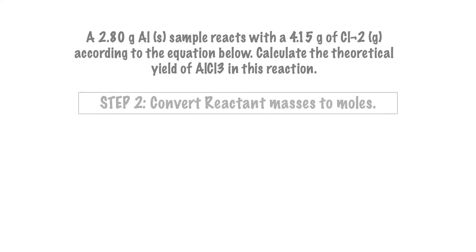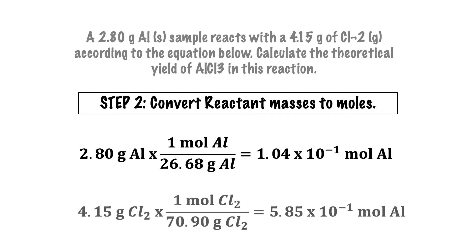In the given problem, we are given with the masses of aluminum and chlorine. We have to convert these mass values to moles using the molar masses of the set reactants, giving us these computations.